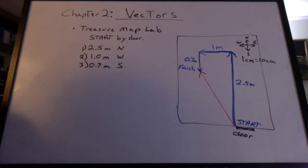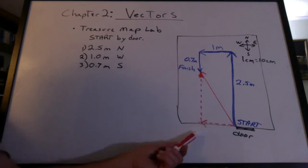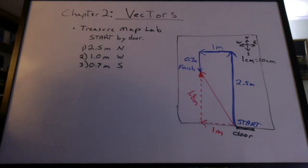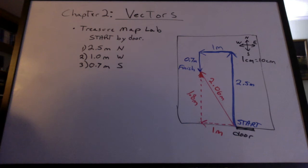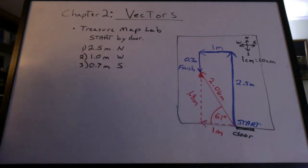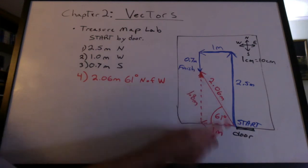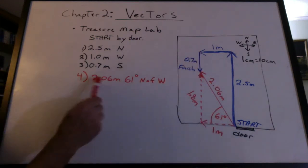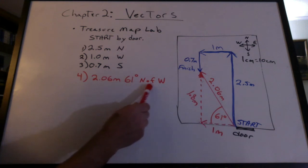To calculate how far it is from the start to the finish, you need to draw a triangle. We would want to go over and up — one meter over and 1.8 meters up. The length of that line would be 2.06 meters. We can calculate the angle by doing inverse tangent, and we get 61 degrees. The one leg of this journey that would replace these others would be 2.06 meters, 61 degrees north of west.